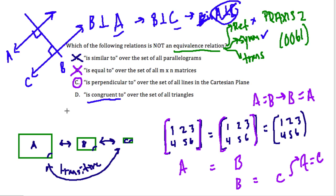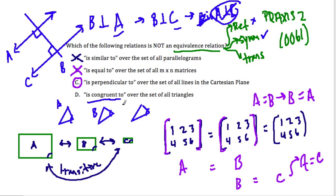And then 'is congruent to' over the set of triangles — two shapes are congruent if they're equal but in different locations. If I have three congruent triangles, just turned a little bit each time, with exactly the same angles in different locations: if A is congruent to B and B is congruent to C, then A must also be congruent to C. Any triangle is congruent to itself. So that is an equivalence relation. In this problem, the perpendicular scenario was the non-equivalence relation.